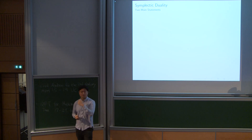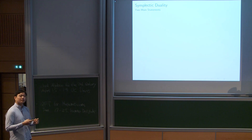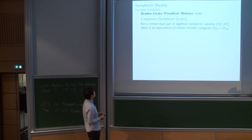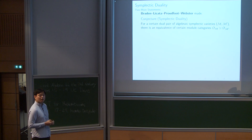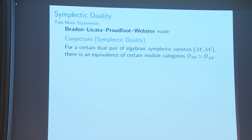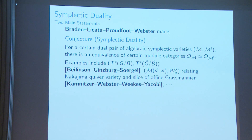Now it's the beginning of the third introduction: symplectic duality. Braden, Licata, Proudfoot, and Webster made a conjecture called symplectic duality. It says that for certain dual pairs of conical symplectic varieties M and M-check, there is an equivalence between two module categories — categories of deformation quantization modules — satisfying many other properties. Examples include the cotangent bundle of the flag variety and the dual group, and also quiver varieties and slices of affine Grassmannians.